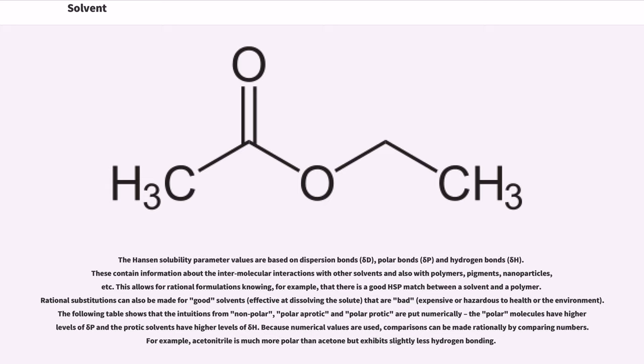The following table shows that the intuitions from nonpolar, polar aprotic and polar protic are put numerically. The polar molecules have higher levels of δP and the protic solvents have higher levels of δH. Because numerical values are used, comparisons can be made rationally by comparing numbers. For example, acetonitrile is much more polar than acetone but exhibits slightly less hydrogen bonding.